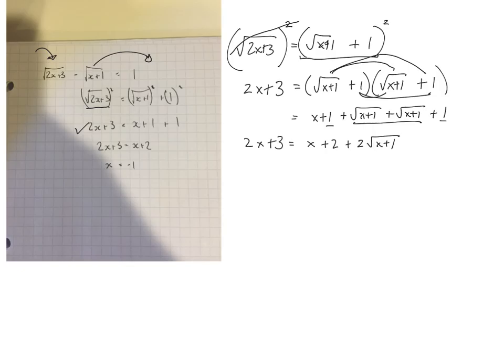Then, I'll collect these like terms. So this x, I'm going to move to the other side and subtract it, so that'll just be an x. The 2 I'll take to the other side and subtract, so that'll be a plus 1. Is equal to 2 root x plus 1.